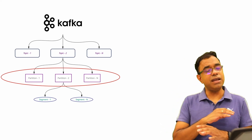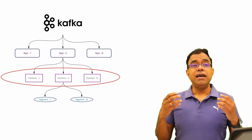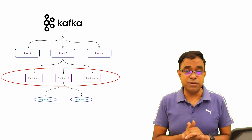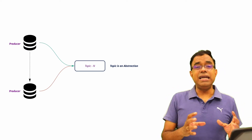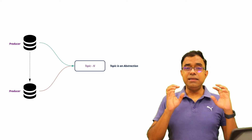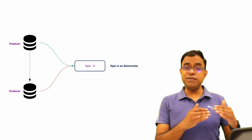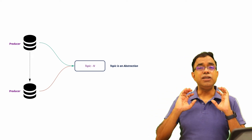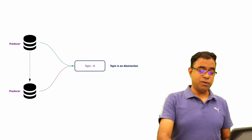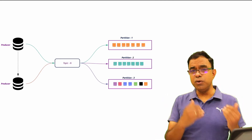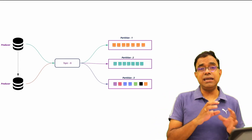Partitions are the key for everything in Apache Kafka — including how your consumers will behave, how your producers will behave, how the replication factor will work, and how storage will be done. Whenever one or more clients produce data for a particular topic, they interact with the topic — they don't directly interact with the partition. Though there are ways to make sure a particular set of data goes to a particular partition, you interact with the topic first. Without the topic, you cannot reach the partition.